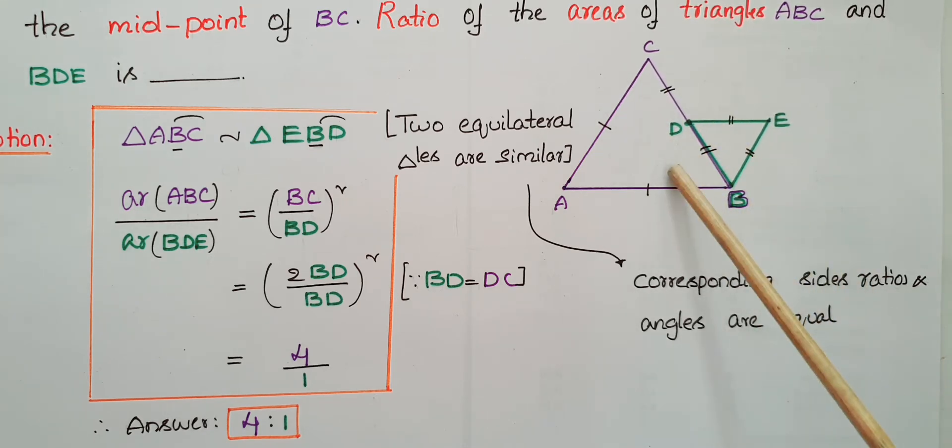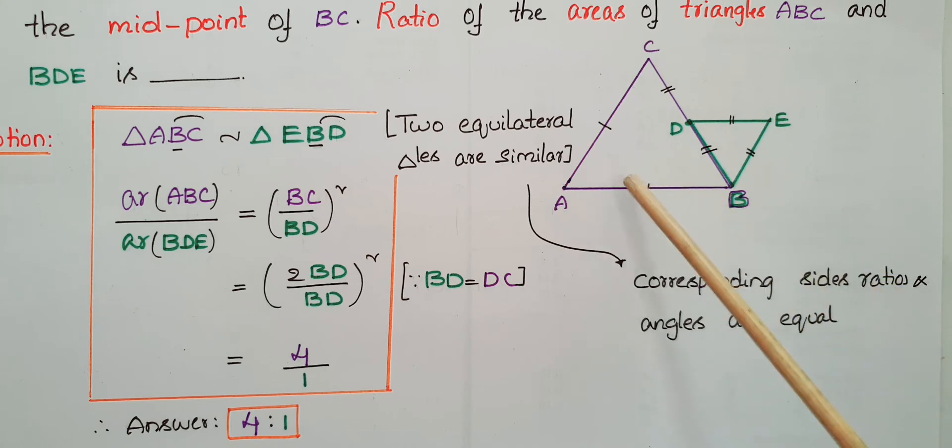We know that two equilateral triangles are always similar because corresponding sides ratios are equal in equilateral triangles, all sides are equal, and each angle is 60 degrees. So corresponding angles are also equal.